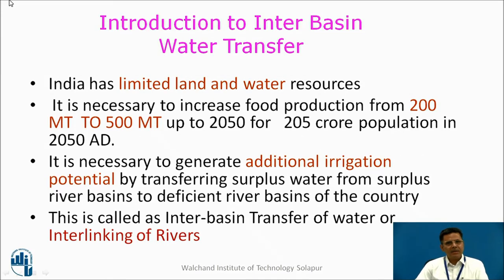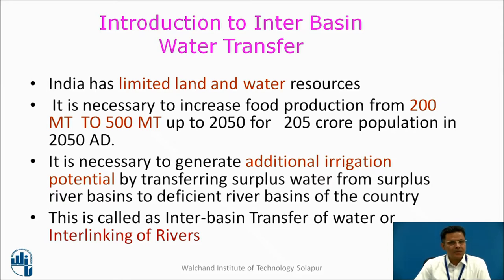India has limited land and water resources. It is necessary to increase food production from 200 million tons to 500 million tons up to 2050, for an estimated 205 crore population in 2050 AD. It is also necessary to generate additional irrigation potential by transferring surplus water from surplus river basins to deficit river basins of the country. This is called inter-basin transfer of water, or interlinking of rivers.